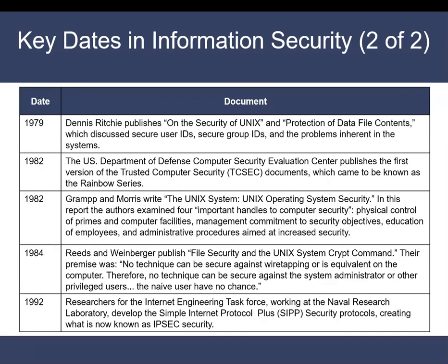Security became part of the operating system design. In the report titled the UNIX Operating System Security, published 1982, the authors examined four important handles to computer security. First, the physical control of premises and computer facilities, putting these machines behind closed doors where authorized personnel only can access them. Second, the management commitment to security objectives and the importance of dedicating a budget to address vulnerabilities. Third, educating employees through adding security training components to the system. And fourth, the administrative procedure policies and rules aimed to increase security.